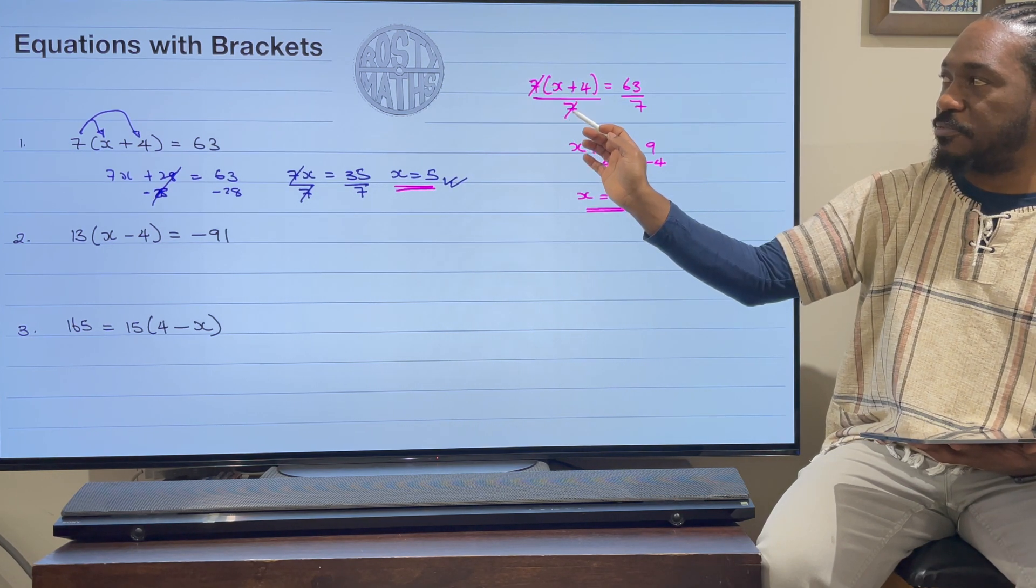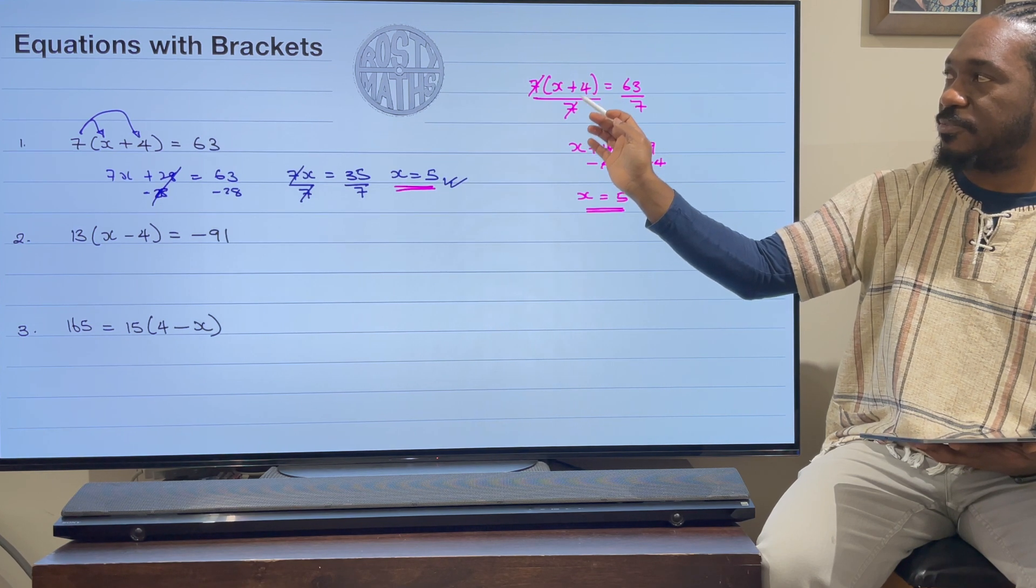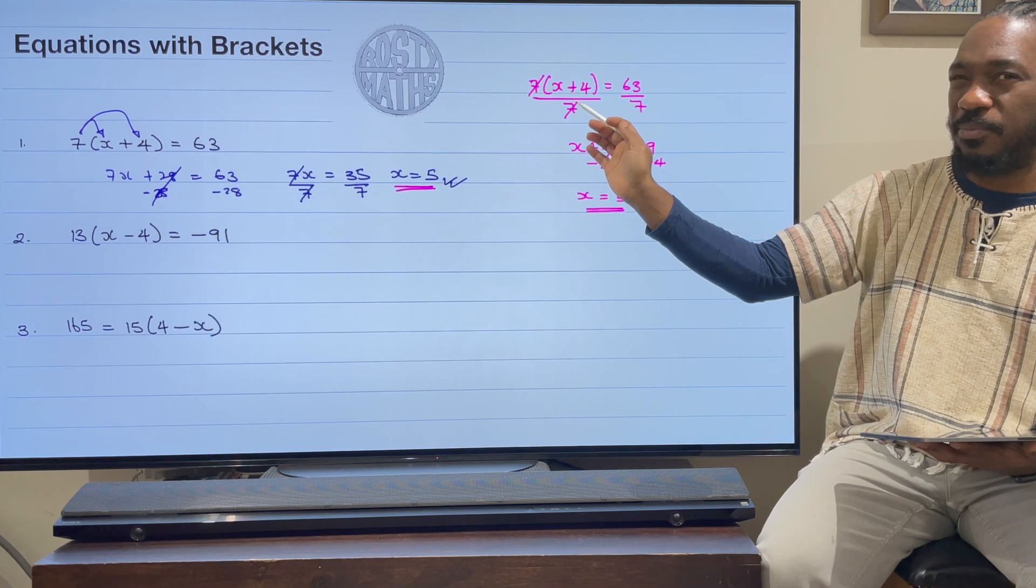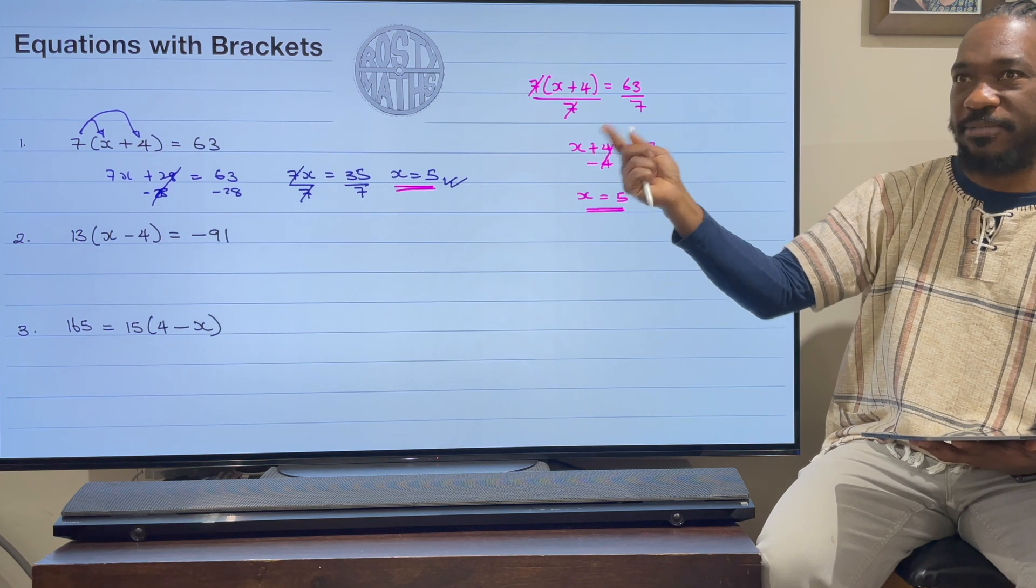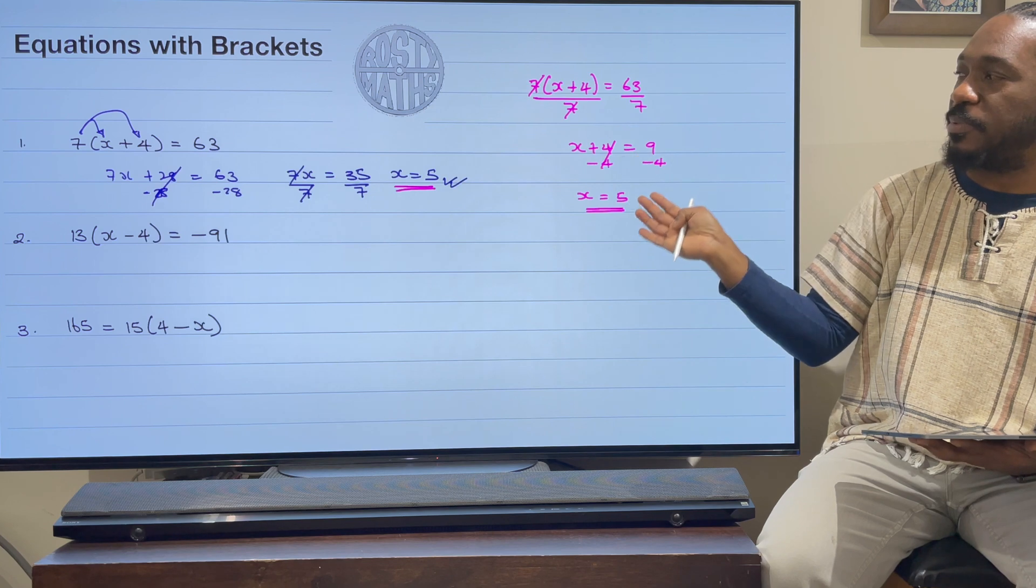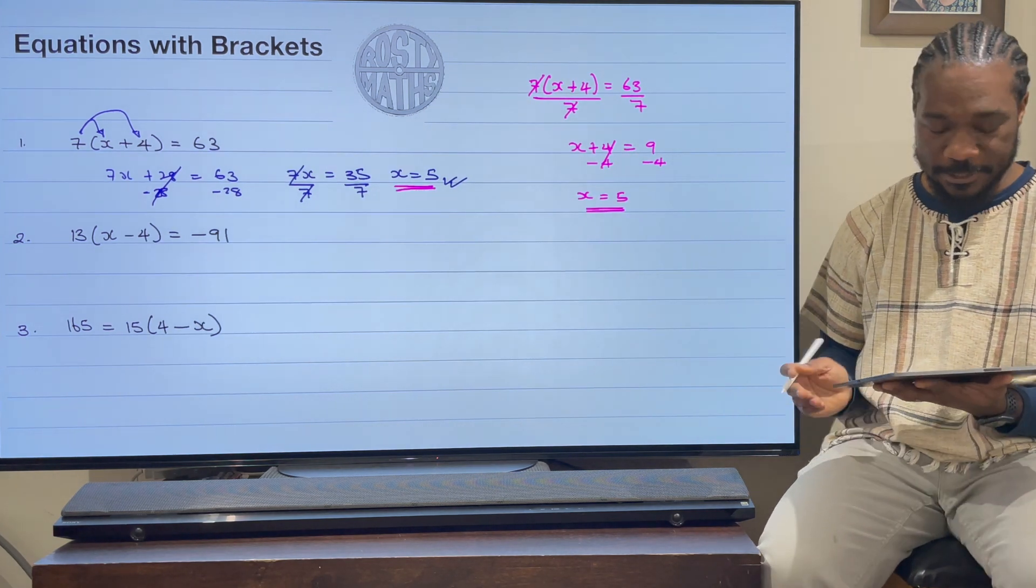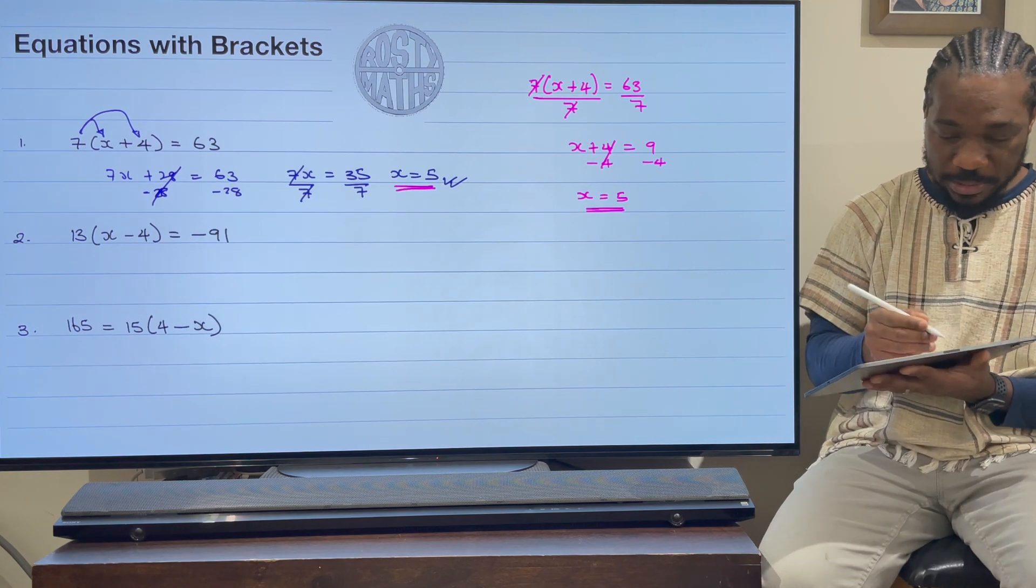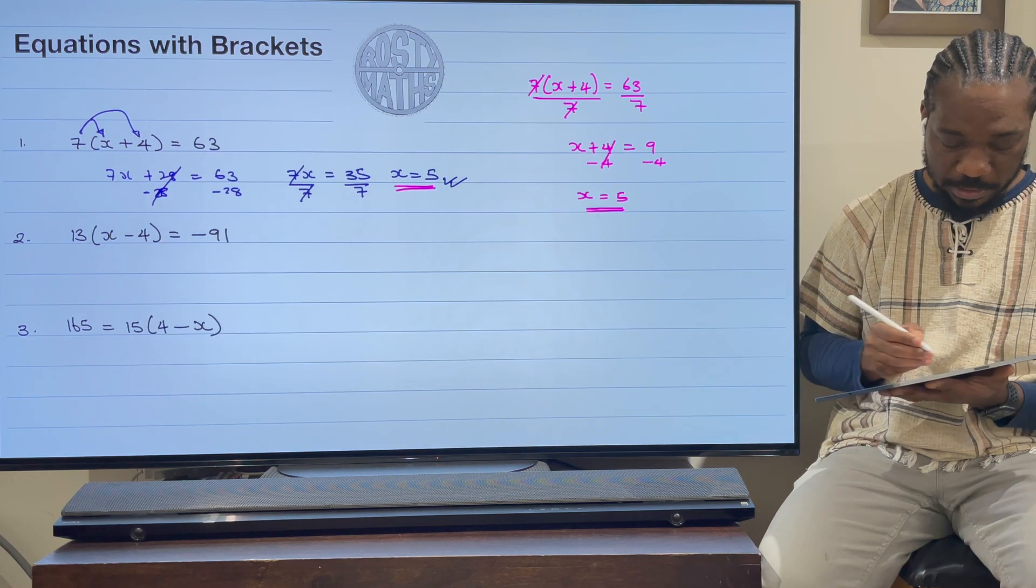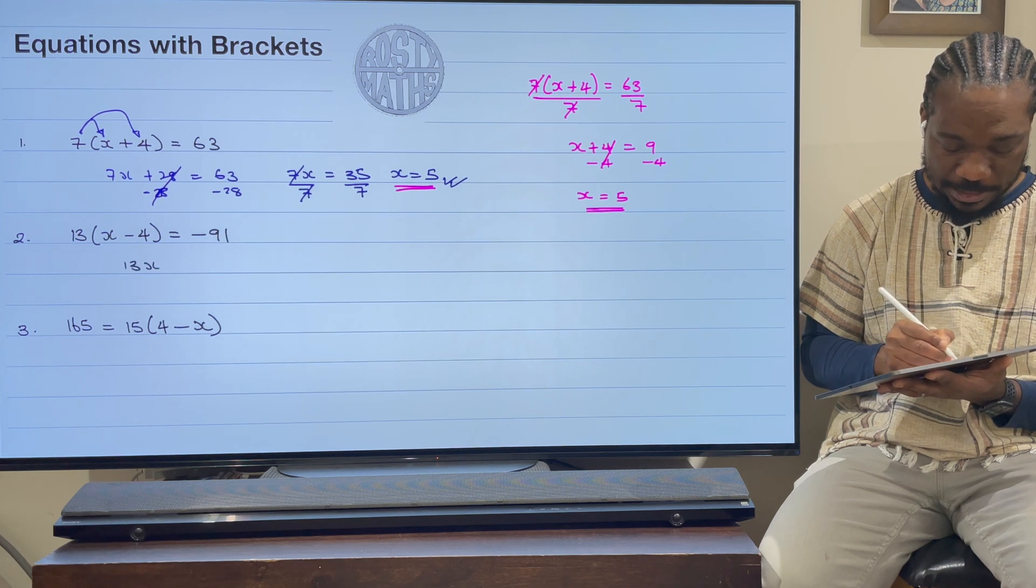This way has a potential to have problems because if, let's just say that 7 wasn't there and I had a 4 below here, some students might think that you can just divide that 4 with this 4 here without expanding out and having two separate fractions. And so I think this might lead people astray. Only if you're really confident, use this method. I'm going to expand the brackets.